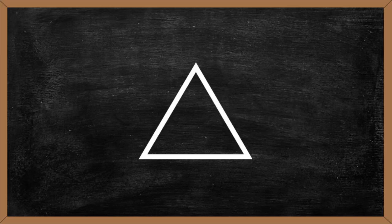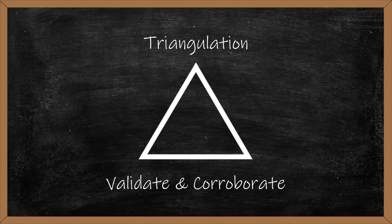After both forms of data have been analyzed separately, they need to be integrated — this will allow us to interpret them together. For this study, we will be using triangulation. Triangulation refers to using both forms of data to validate and corroborate findings. We will use the survey results to confirm our findings from the interviews, helping us gain a more comprehensive understanding of our research results to best answer our research question.